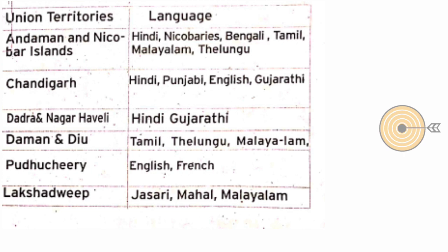Continuing the Union Territories: Dadra and Nagar Haveli — Hindi and Gujarati. Daman and Diu — Tamil, Telugu, and Malayalam. Puducherry — English and French, with Malayalam also present — two to three languages there. Lakshadweep — Jeseri, Mahal, and Malayalam — three languages in Lakshadweep.